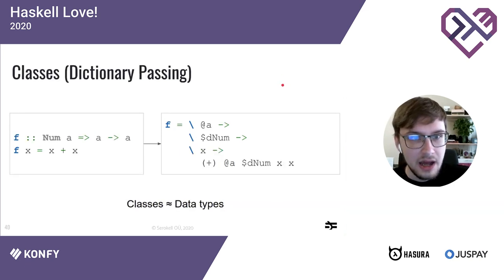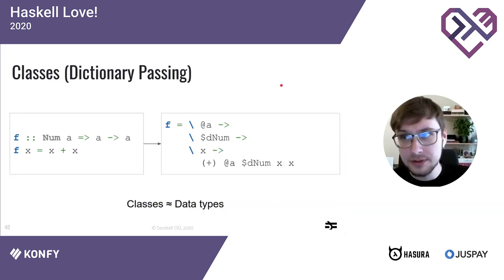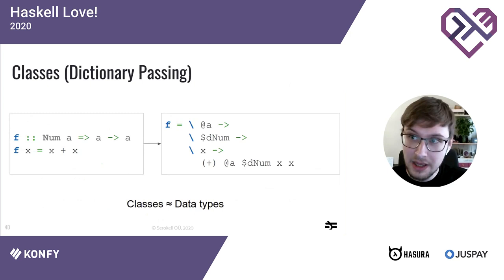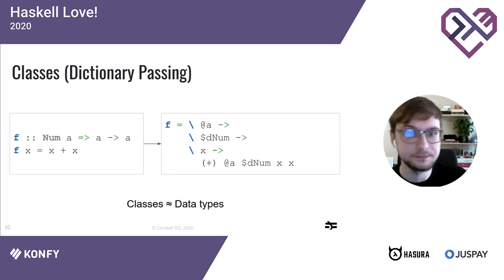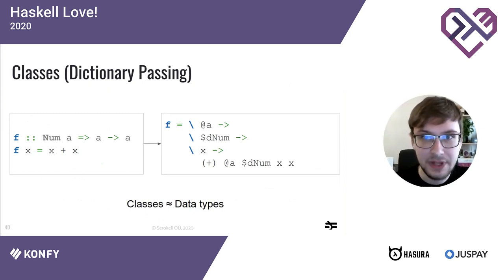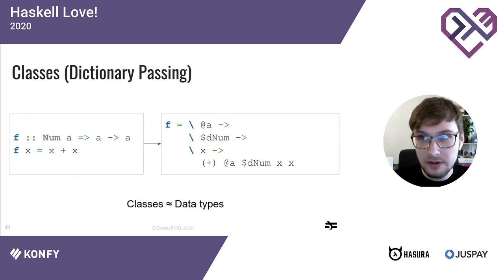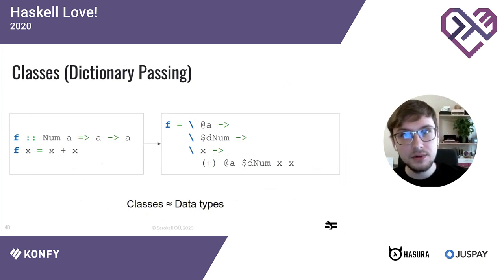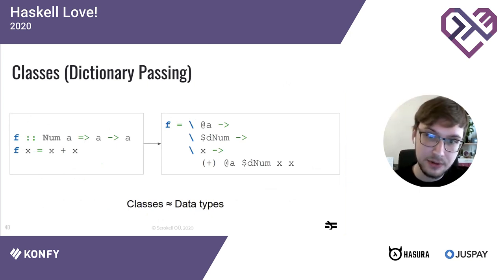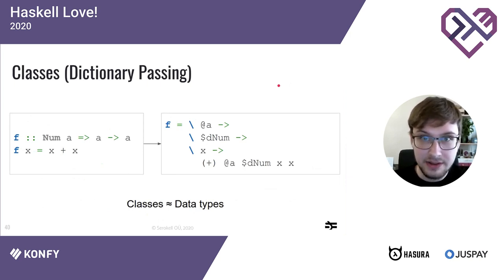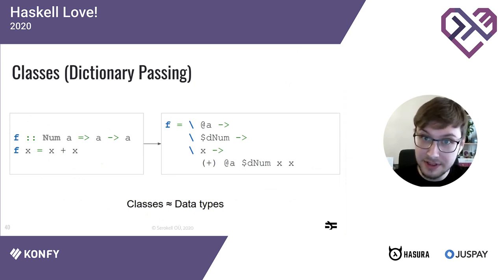The type information is present virtually everywhere, but a later pass removes it all — so at runtime it is not present and does not take any space. Now, classes are also explicit in Core. Their instances are passed as ordinary data, which we call dictionaries — class dictionaries. Unlike type parameters, they are passed at runtime.